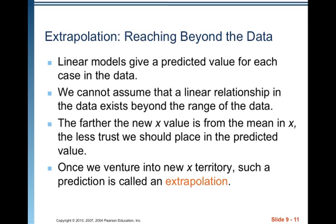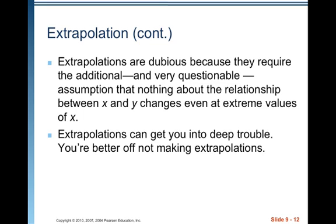Linear models give a predictive value for each case in the data — for every x value you have a y-hat as well as a y. Your y is your observed value and y-hat is the model-predicted value for a particular x. We cannot assume that a linear relationship in the data exists beyond the range of the data. The farther the new x value is from the mean of x, the less trust we should place in the predicted value. Once we venture into new x territory, such a prediction is called an extrapolation.